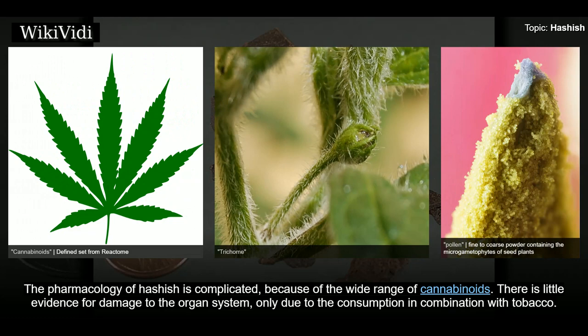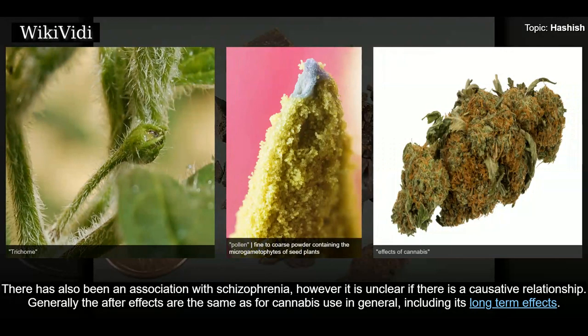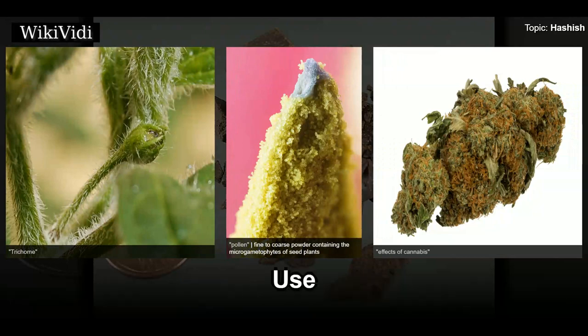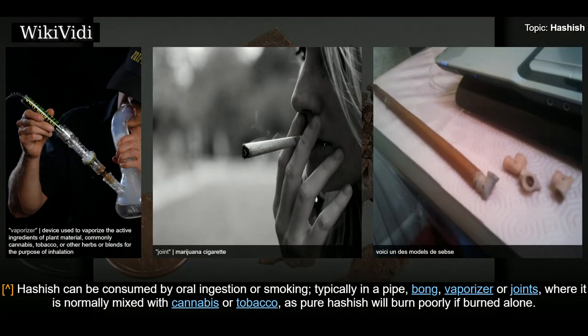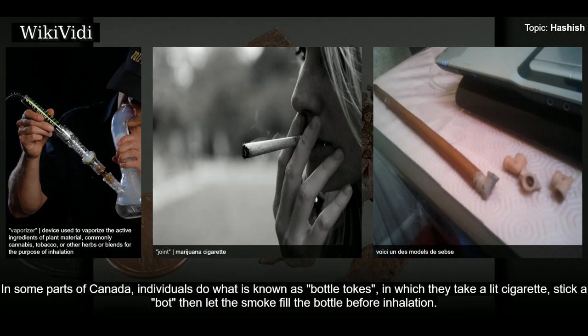The pharmacology of hashish is complicated because of the wide range of cannabinoids. There is little evidence for damage to the organ system; only in combination with tobacco has an association been noted. There has also been an association with schizophrenia, though it is unclear if there is a causative relationship. Hashish can be consumed by oral ingestion or smoking, typically in a pipe, bong, vaporizer, or joint, normally mixed with cannabis or tobacco, as pure hashish burns poorly if burned alone.